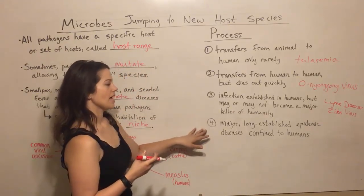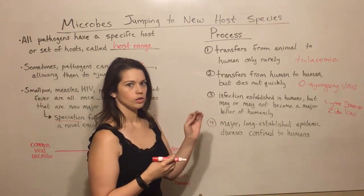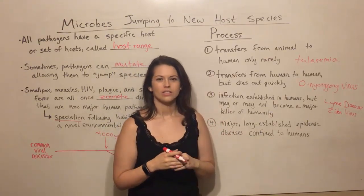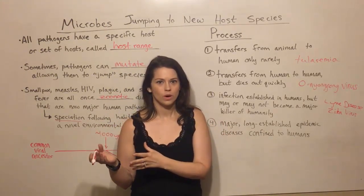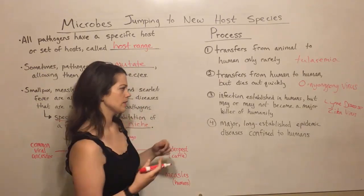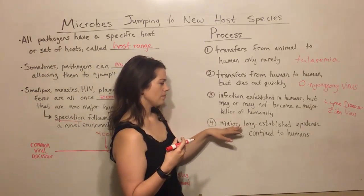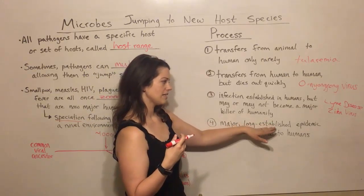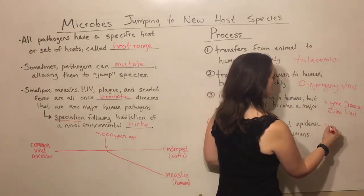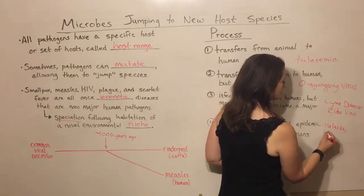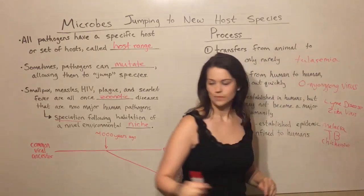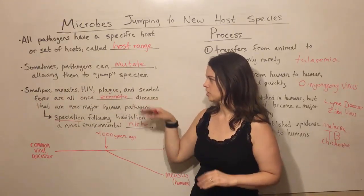The final step is when you have a disease that has become a major, long-established epidemic disease confined to humans — no longer jumping from an animal reservoir, but human-to-human transmission, sometimes aided by vectors like mosquitoes, that have been causing disease in humans for a long time. This includes things like malaria, tuberculosis, chickenpox, as well as the ones already mentioned: smallpox, measles, HIV, and plague.